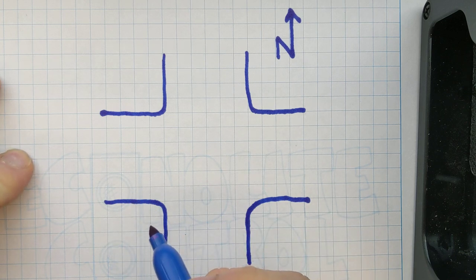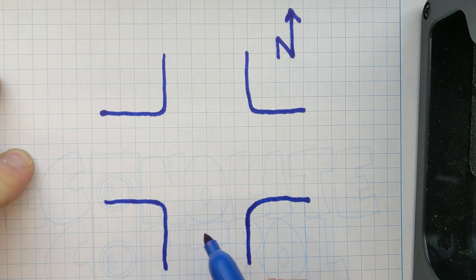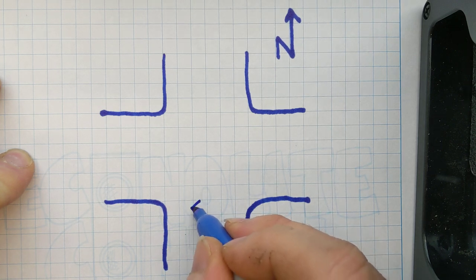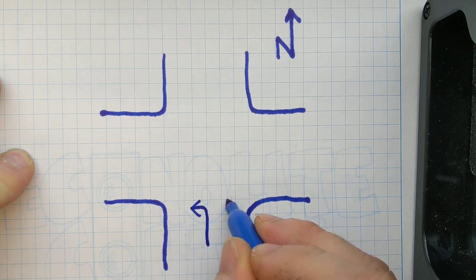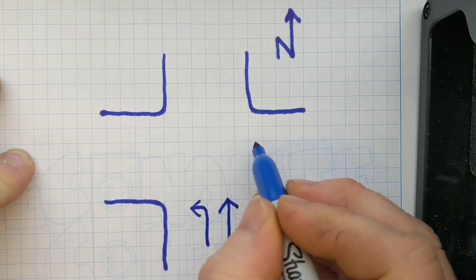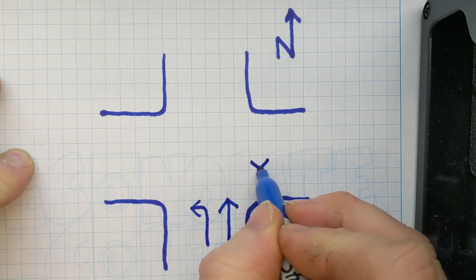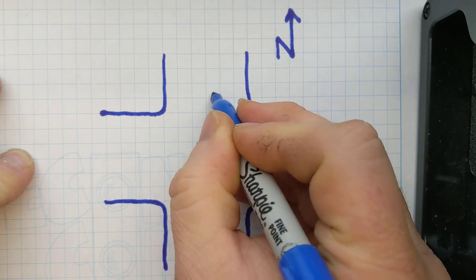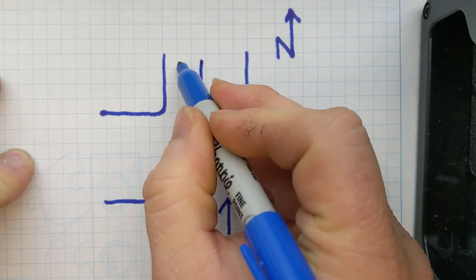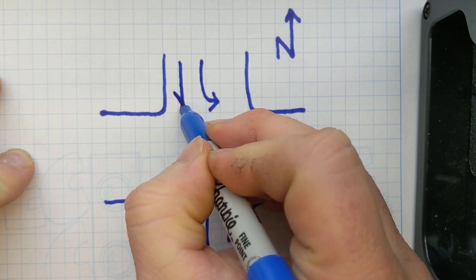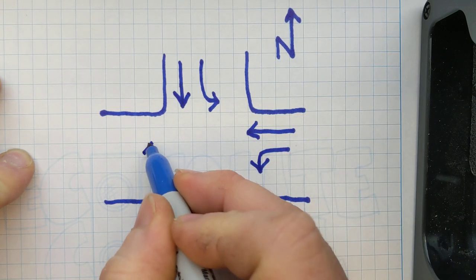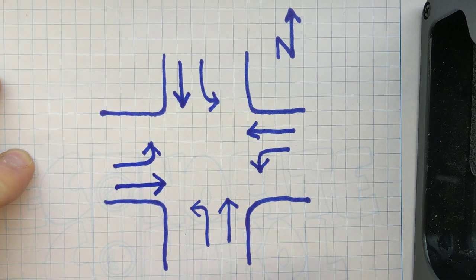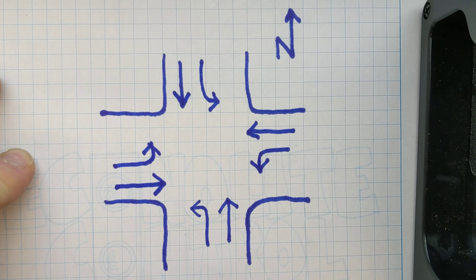So, we know at a standard intersection, an eight-phase intersection, we have a left turn. We have a through phase. Then we have another left turn. Then we have another through phase. Then we have another left turn. And then we have a through phase. And once again, left turn, through phase.